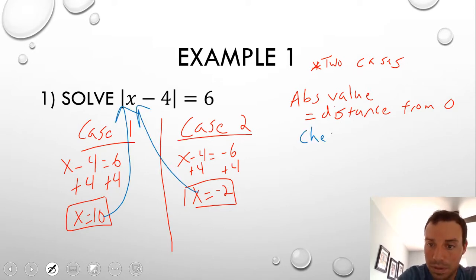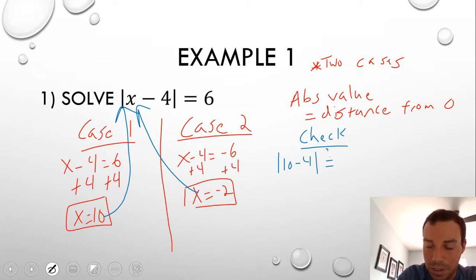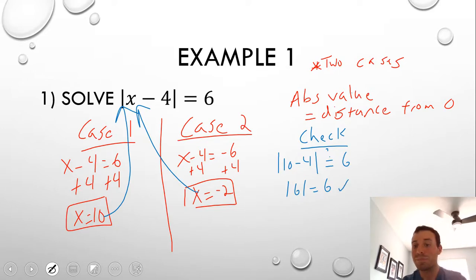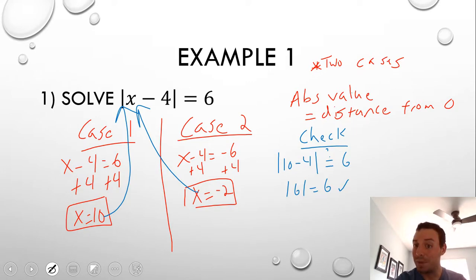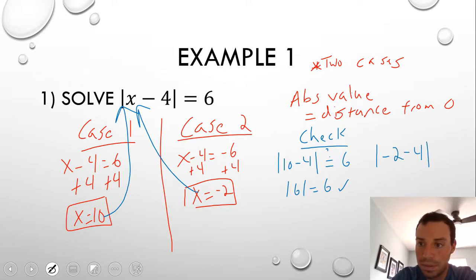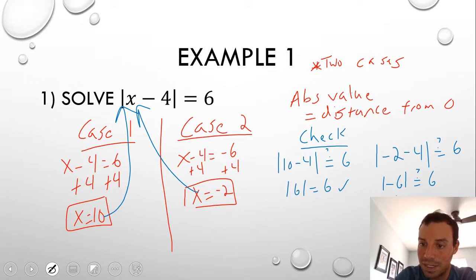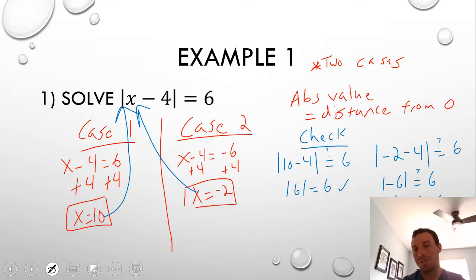Let's check x equals 10: the absolute value of 10 minus 4 — is that equal to 6? The absolute value of 6 equals 6, so that works. Now let's check x equals negative 2: the absolute value of negative 2 minus 4, which is the absolute value of negative 6, equals 6. Yes — because the absolute value of negative 6 is positive 6. Absolute value is the distance from zero; negative 6 is 6 away from zero.